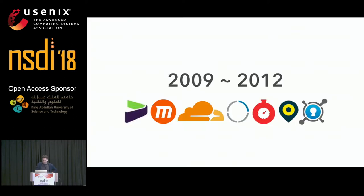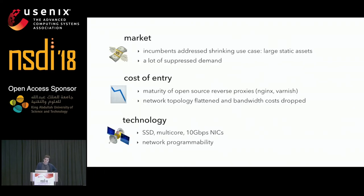It's unfortunate because the networking community kind of passed by a really exciting time in this space. Between 2009 and 2012, lots of startups arose in this space and almost all still exist. They arose from a confluence of three factors: the market was ripe for the taking, incumbents addressed a shrinking use case — the distribution of large static assets — and the nature of content was changing with suppressed demand for new features. At the same time, the cost of entry plummeted with mature open source reverse proxies like NGINX and Varnish.